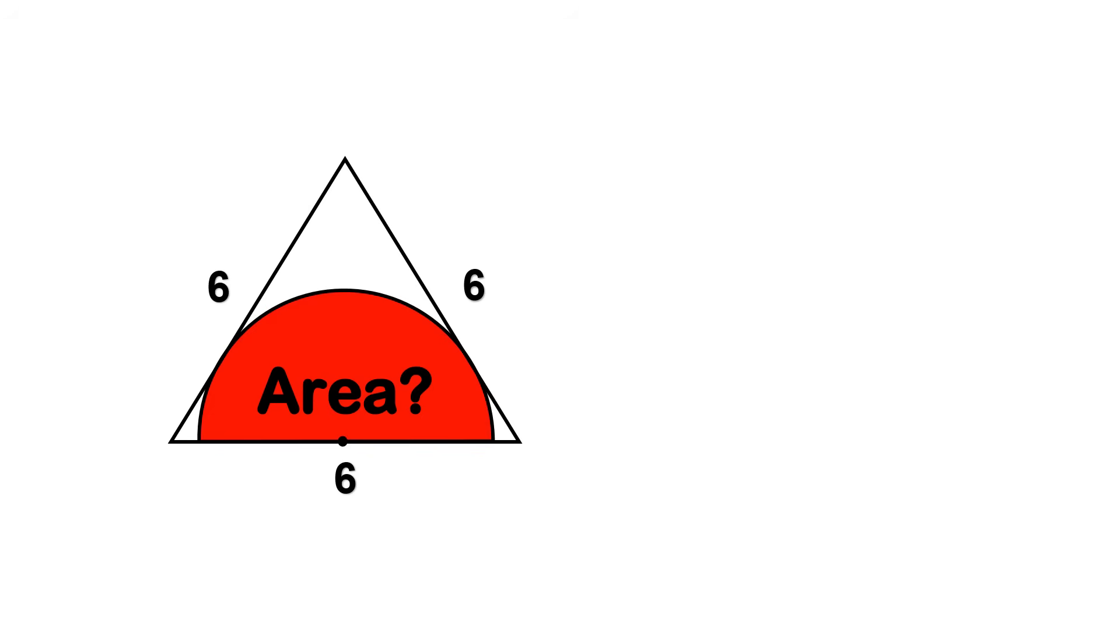Alright, let's solve it. Let's assume this point is the center of our semicircle and let the radius be r. If that's the case, the area of the red region, which is just a semicircle, is A equals pi times r squared divided by two.